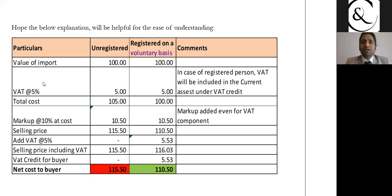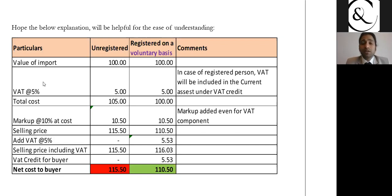With a markup applied, if you are in a B2B model, your selling price would be 115.5 as an unregistered entity, whereas if voluntarily registered your effective selling price to the customer would be 110.5. Definitely companies will prefer to deal with registered suppliers.